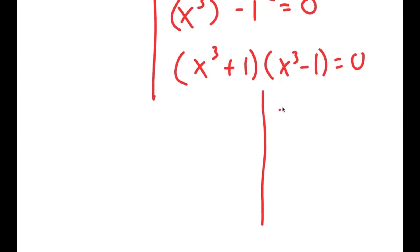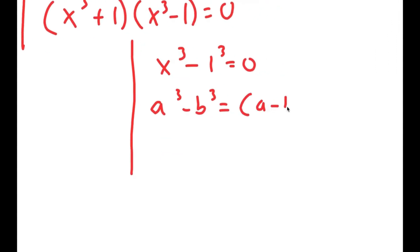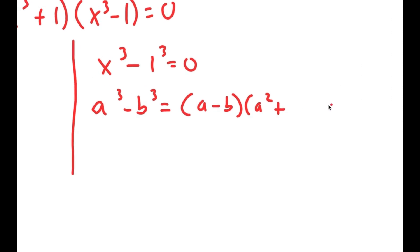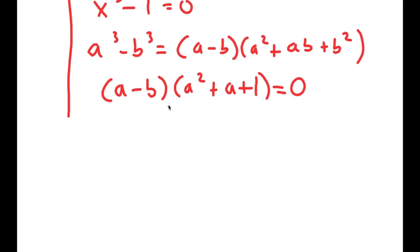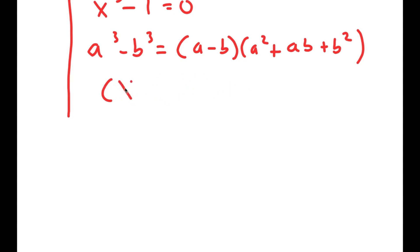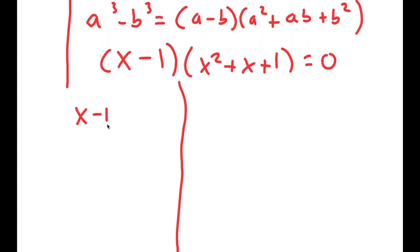Now for x to the power of 3 minus 1 equals 0, I'm going to use the property a cubed minus b cubed equals a minus b times a squared plus ab plus b squared. So this turns into x minus 1 times x squared plus x plus 1 is equal to 0, which gives me yet another two equations.